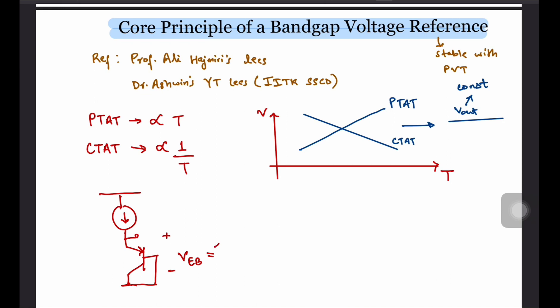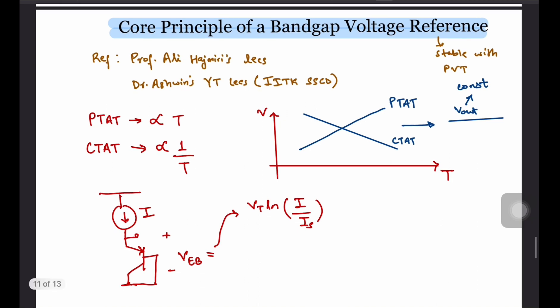We know that the collector current can be expressed as IC equals to IS times exponential VBE by VT, neglecting the 1 since I am assuming a forward bias operation. Manipulating this expression, we get VEB equals to VT ln IC over IS where VT is the thermal voltage and is expressed as KBT over Q. So for a fixed IC, does VEB exhibit a PTAT behaviour?